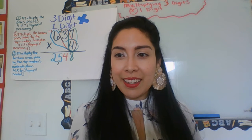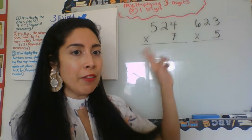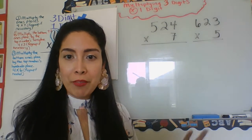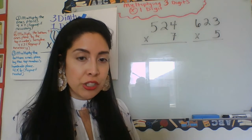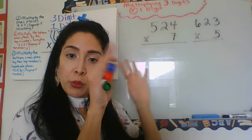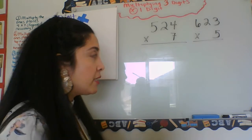All right, let's try some examples together. Okay, let's try multiplying 524 times seven, so three digits by one. Let's go ahead and get started. We do the ones with the ones, so we go from bottom to top.